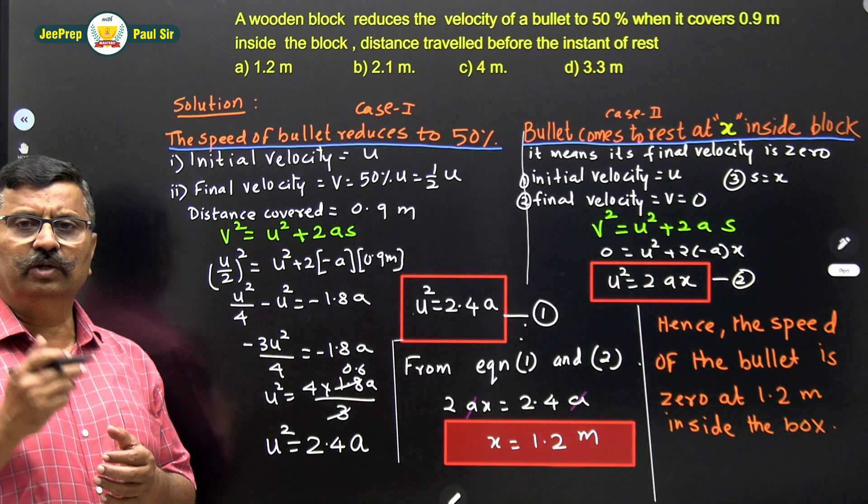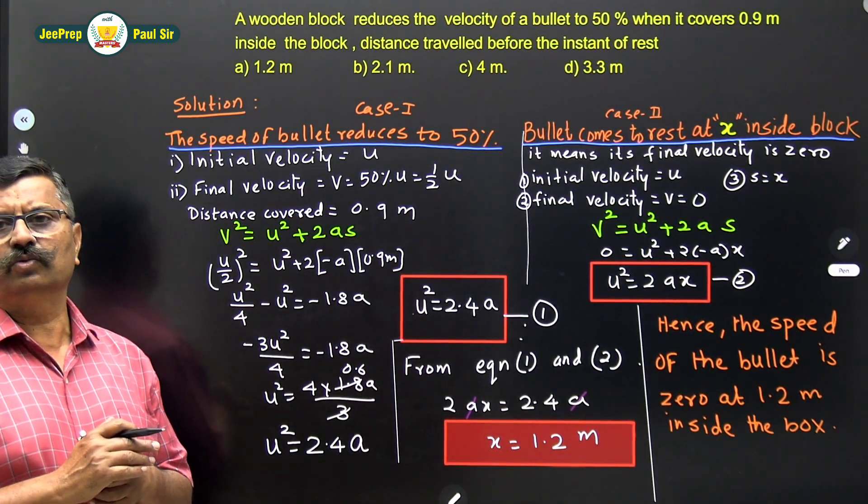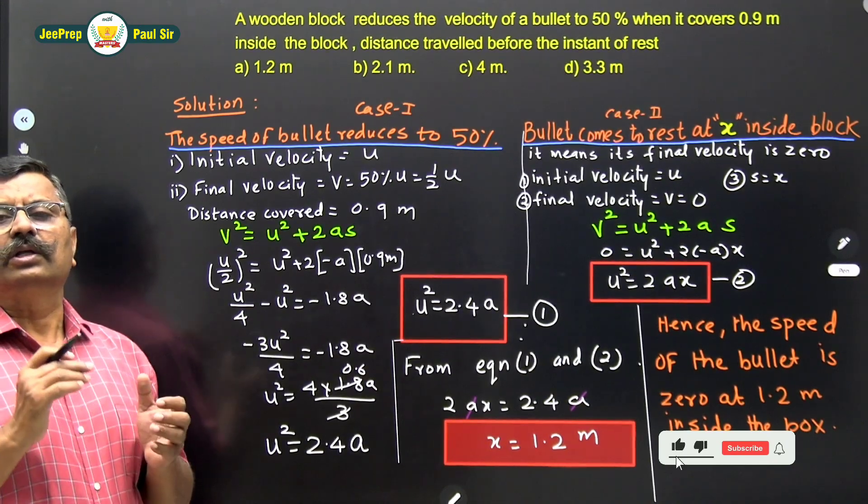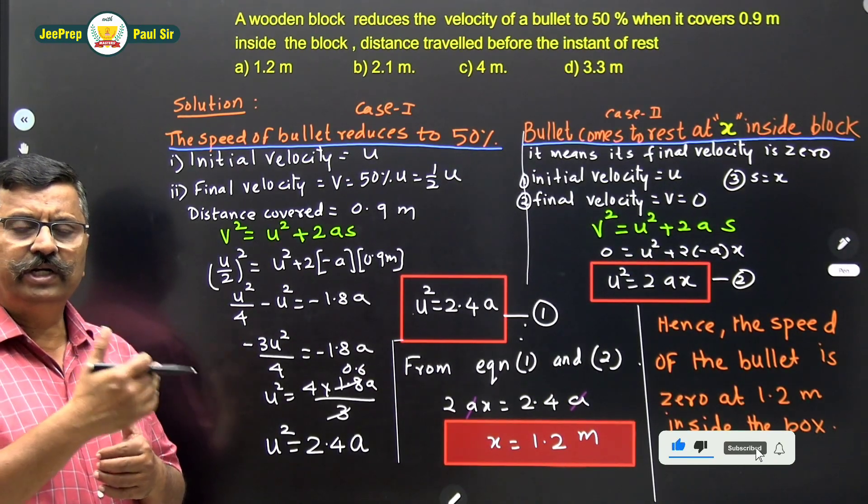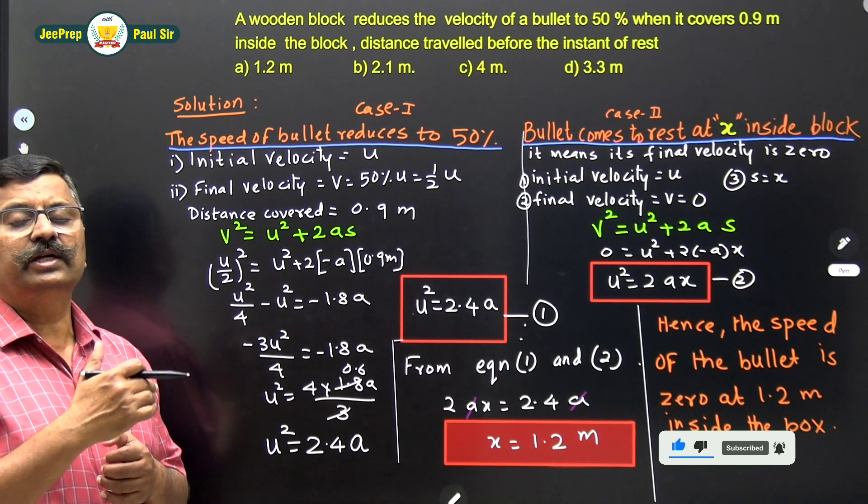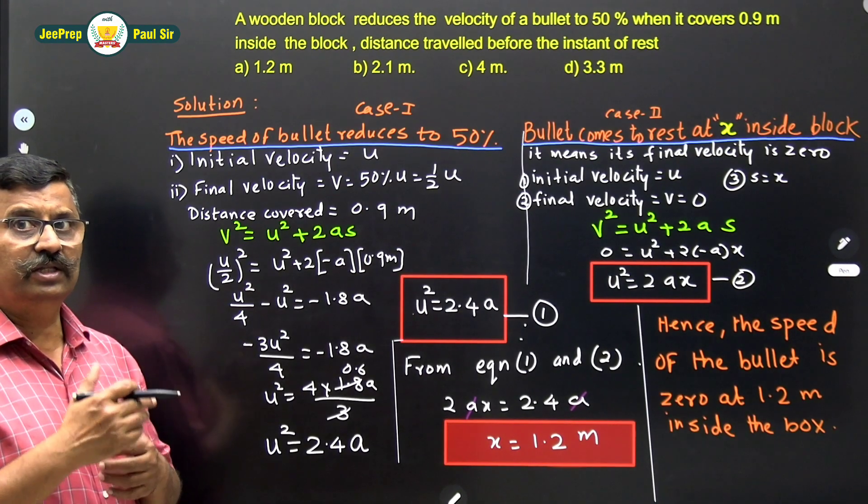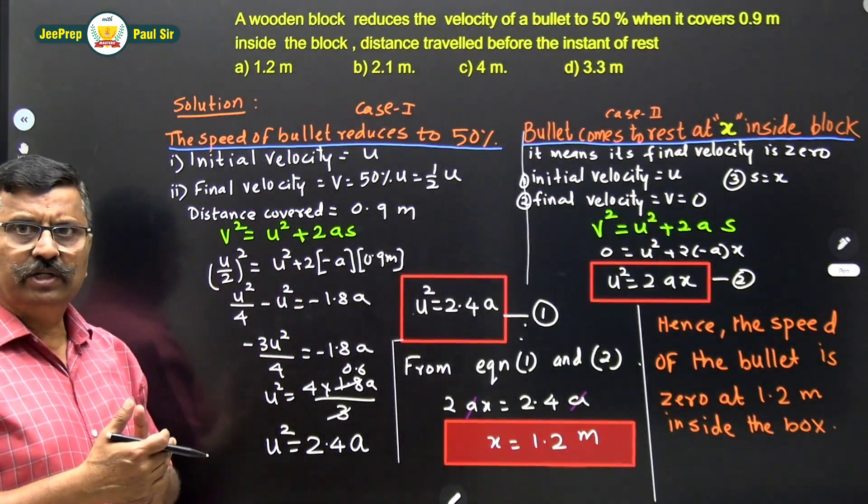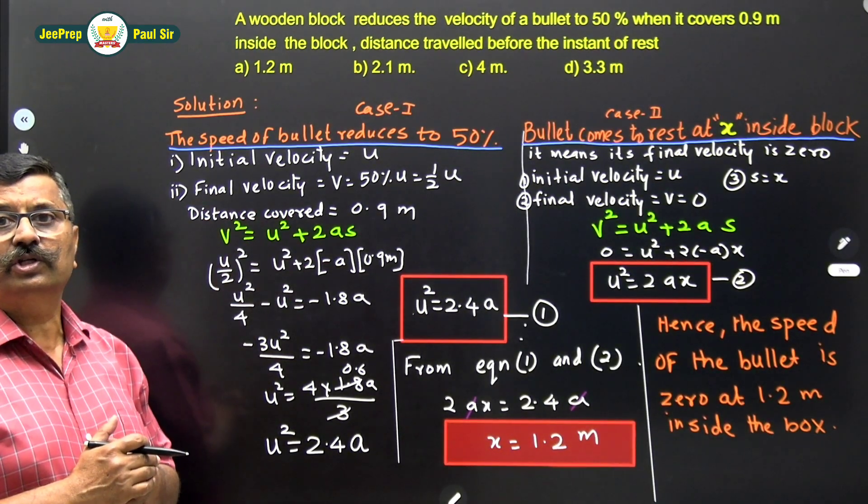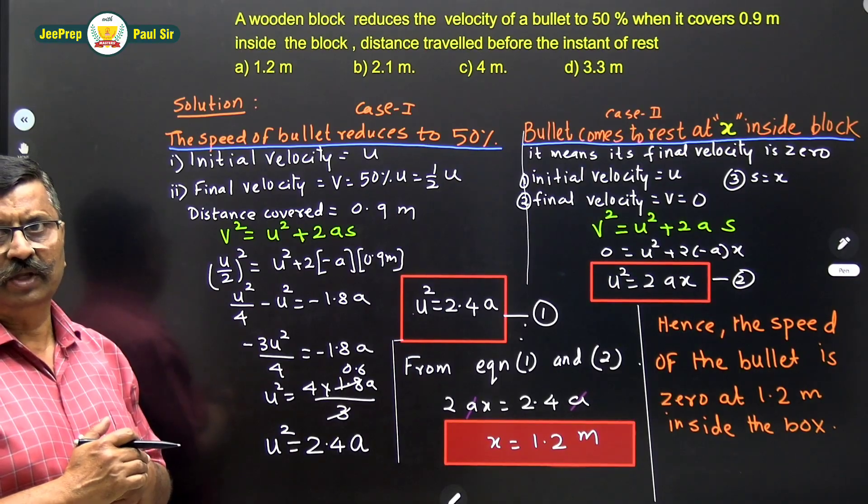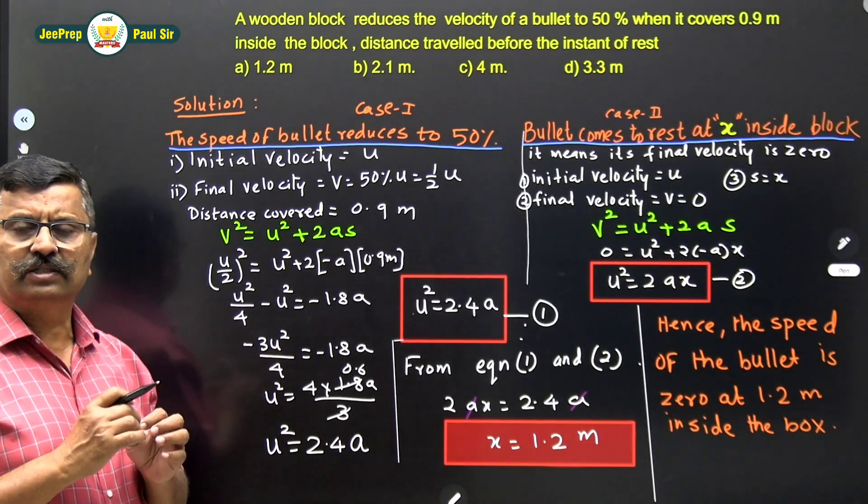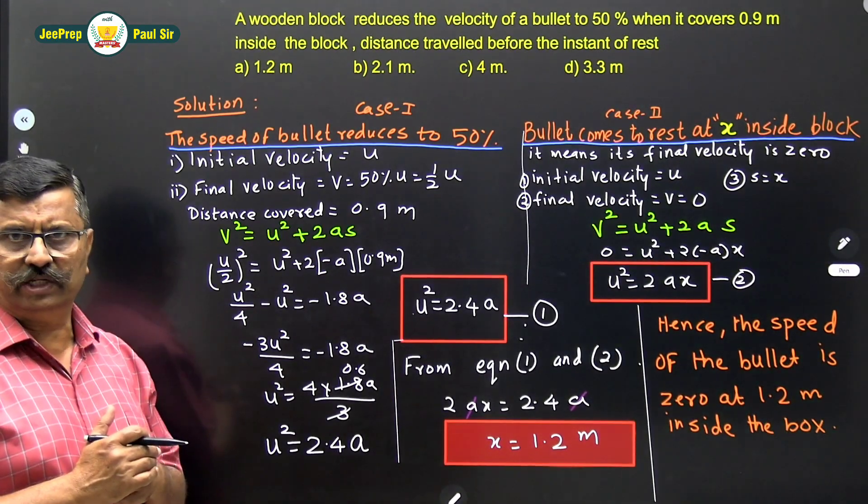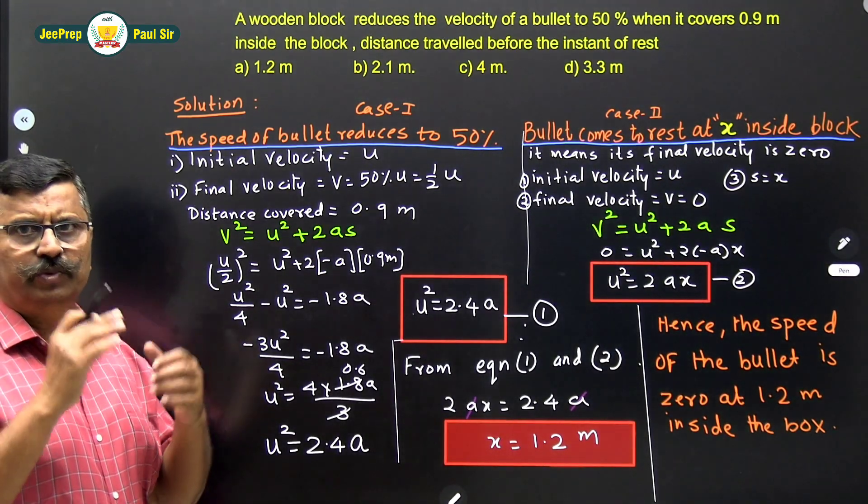See there is a wooden block and the bullet is fired towards that wooden block. When bullet enters into the wooden block, the velocity of the bullet decreases means it decelerates. So there is a negative acceleration and after covering 0.9m, the velocity of the bullet reduces to 50%. Now at what distance the speed of the bullet becomes 0 means bullet comes to rest. Let that distance be x.